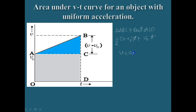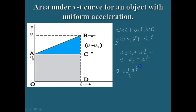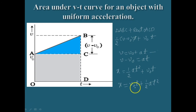We know v = v₀ + at, so we can write v − v₀ = at. Therefore x = ½ × at × T + v₀T, which gives us x = v₀T + ½at². This is the second kinematic equation.